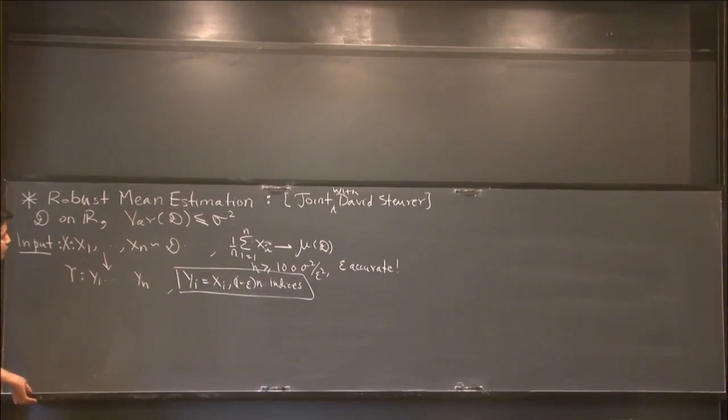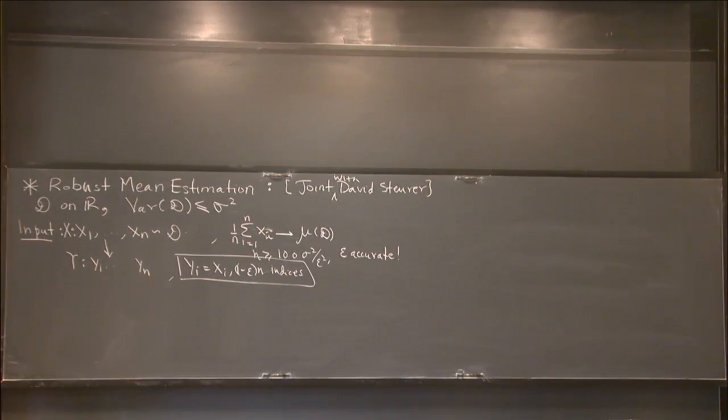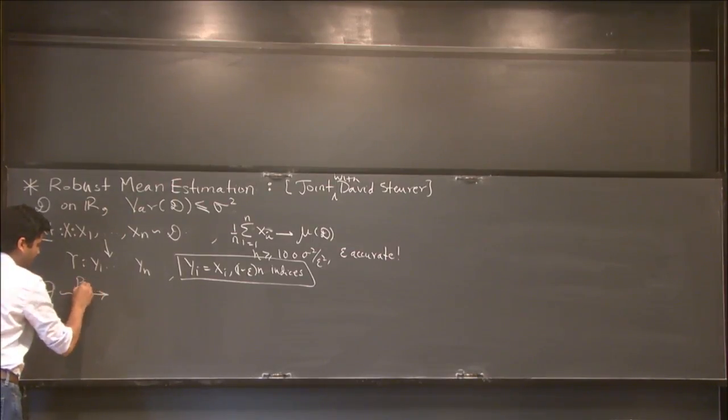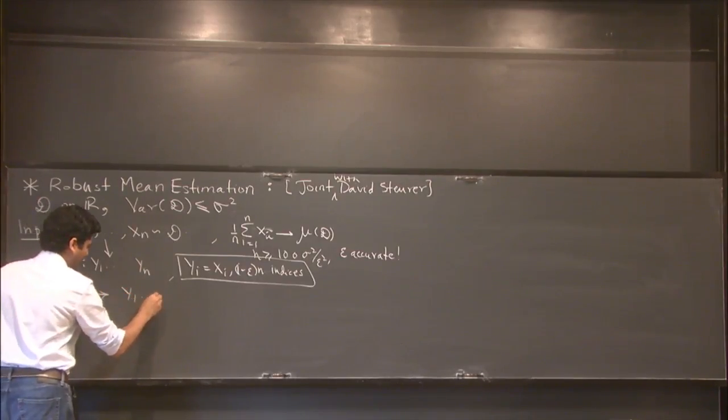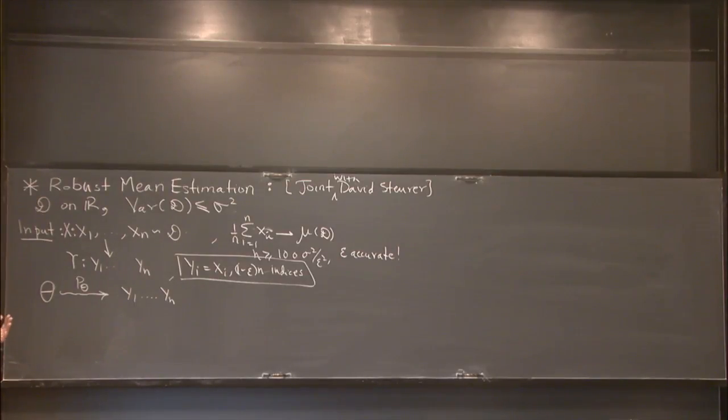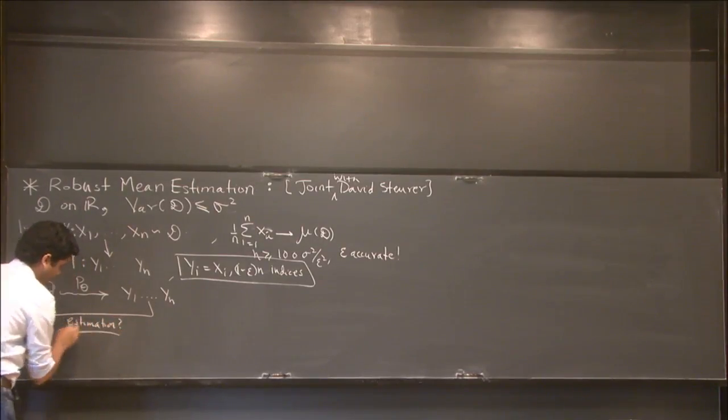You can generalize the theme of this problem, the basic framework, and cover many problems that people have looked at. Here's the general framework. There is some unknown parameter theta. This need not be a single real parameter like the mean mu, but could be a high-dimensional thing. Let's say there are p different parameters I want to estimate. But I don't get to see theta directly. Theta somehow indexes into a probability distribution P_theta. This abstract process corresponds to taking some distribution with that mean and then corrupting epsilon fraction of the samples. I imagine I get IID samples from this P_theta, Y_1 through Y_n. My goal is to invert this generation process, to look at the samples and go back and estimate theta. This is what I call estimation.